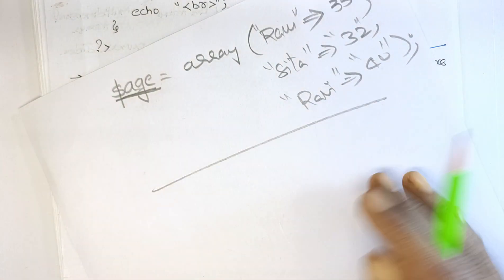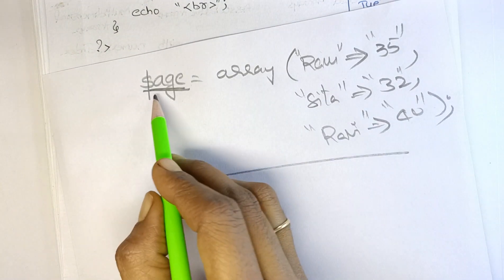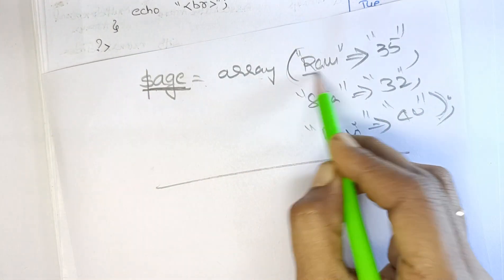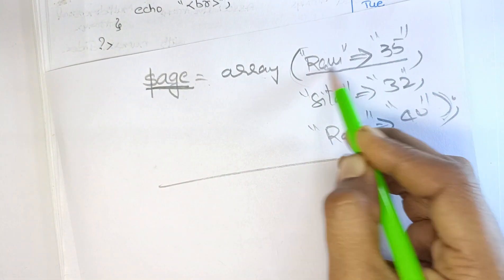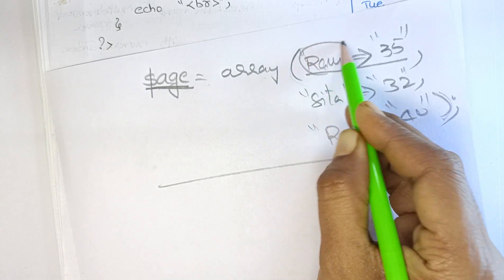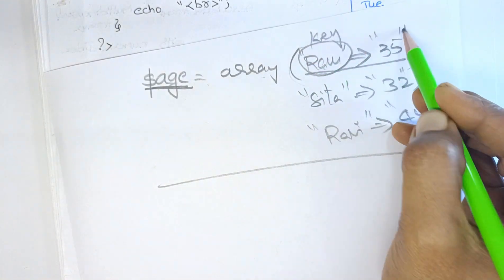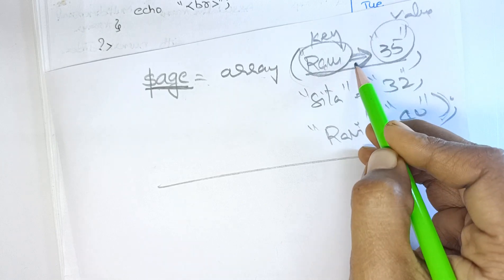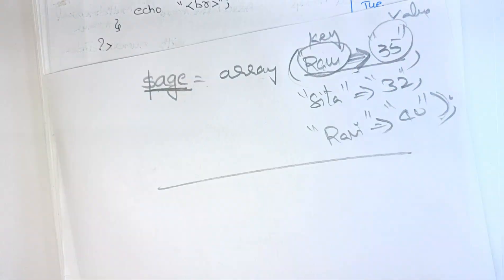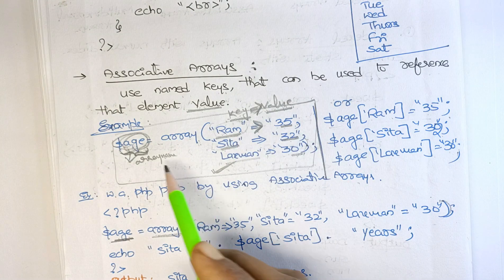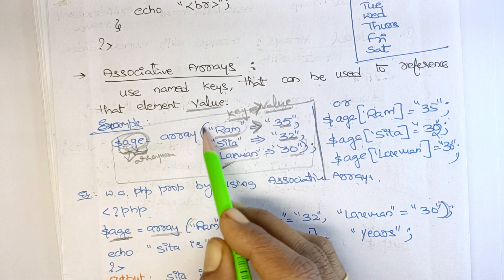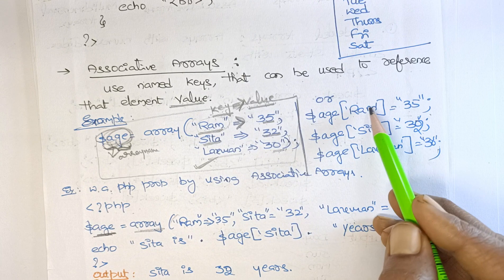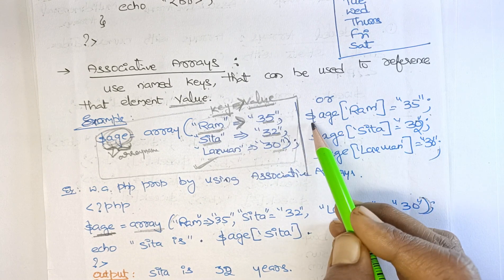So this is nothing but an associative array. The array name is equal to the array function, and within the function you use key-value pairs. This is the key, this is the value. Key-value pairs use the double arrow symbol. For example, dollar age is equal to array, and within the function you mention the key-value pairs.